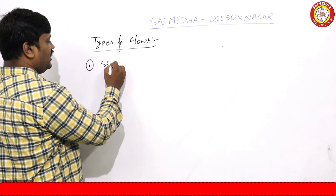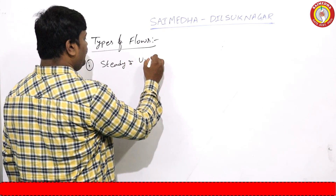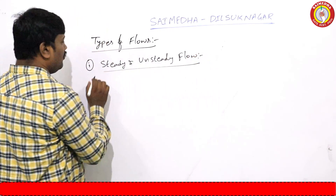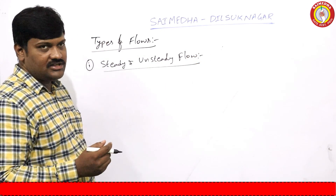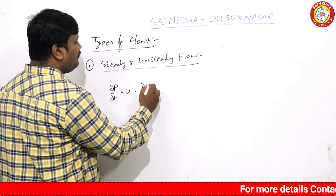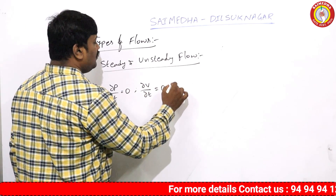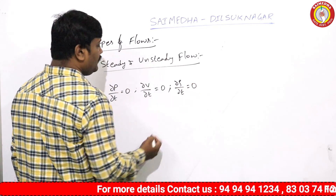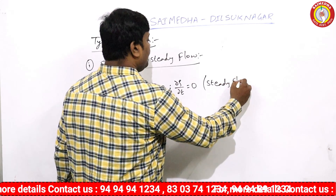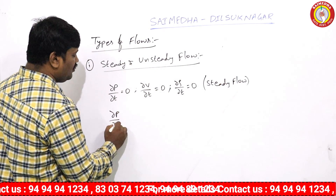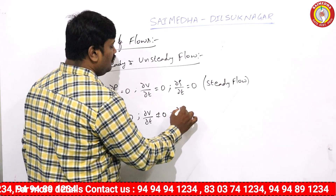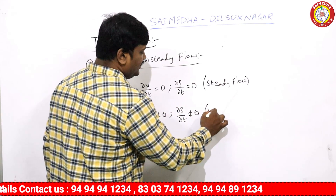The first one we will take steady and unsteady flow. In steady flow, generally what we know: ∂p/∂t = 0, ∂v/∂t = 0, ∂ρ/∂t = 0. For unsteady flow: ∂v/∂t ≠ 0, ∂ρ/∂t ≠ 0 — which we call it as unsteady flow.